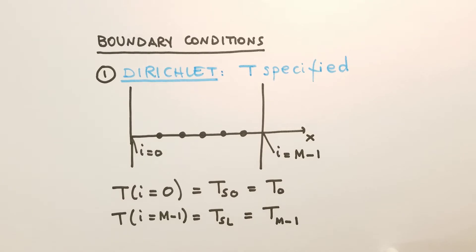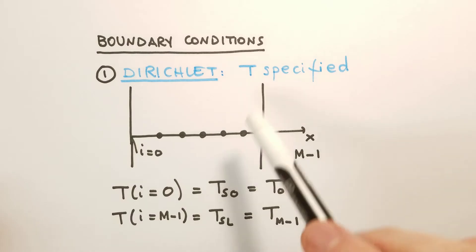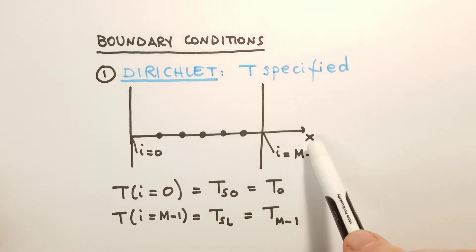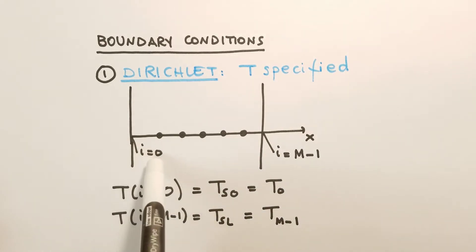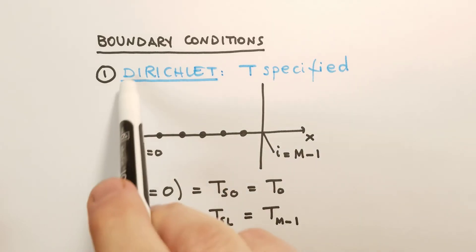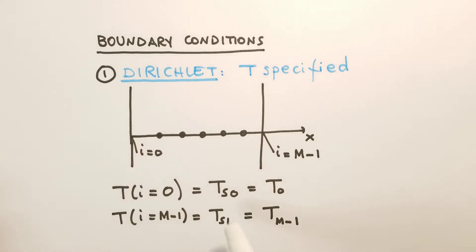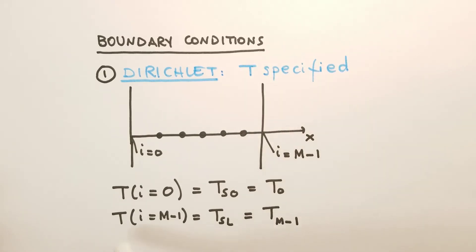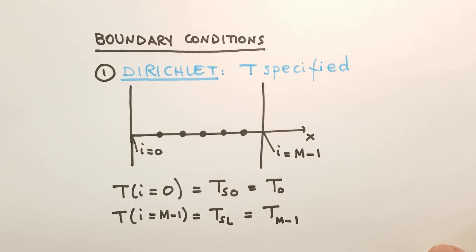The first is of course Dirichlet boundary conditions. For this kind of boundary condition, the temperature is specified at the boundaries. So this is our discretized domain. At i equals zero on the left side, the temperature is specified and it's equal to T surface zero, T_S0. On the right-hand side of the domain, the temperature at i equal capital M minus one is equal to T surface L, T_SL. So this is the simplest case.